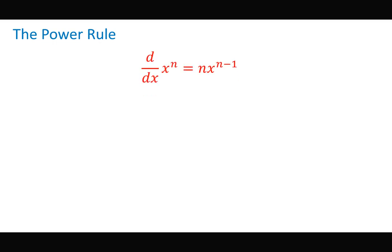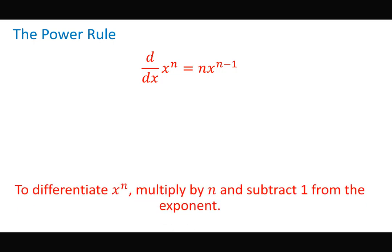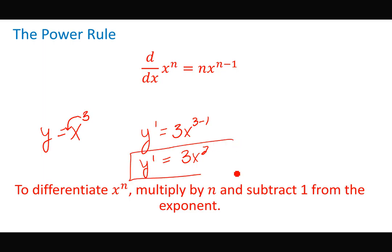Power rule — this is a good one, this one will help you out a lot. So d/dx of x raised to the n power simply becomes n times x raised to the power of n minus 1. So if y equals x cubed and I want to find y prime, I bring the 3 down, so it becomes 3x to the 3 minus 1, so 3x squared would be my derivative function.